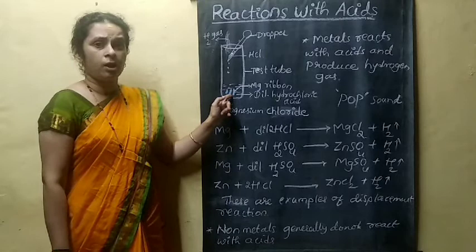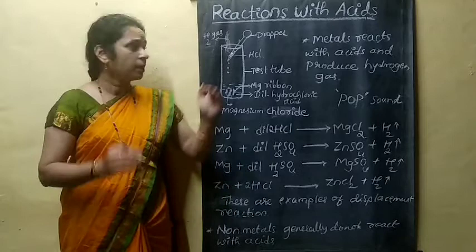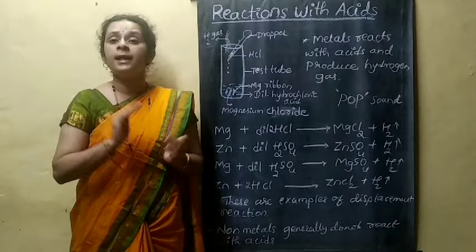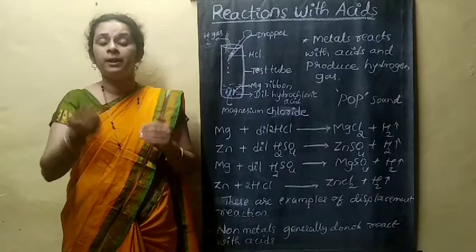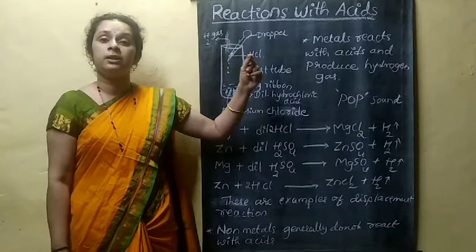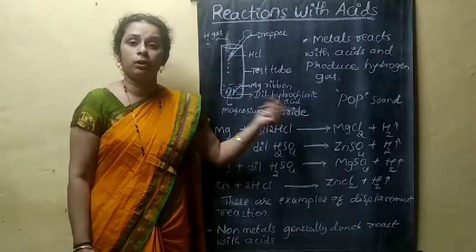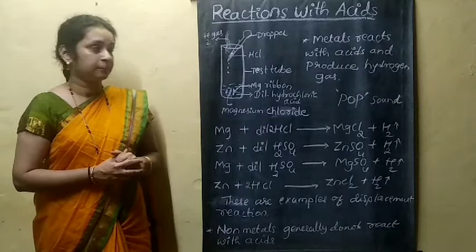You can carry out similar reactions using other metals and acids. Instead of magnesium, you can take zinc, and instead of HCl, you can use sulfuric acid. In general, when metals react with acids, they produce and liberate hydrogen gas, which is confirmed by the pop sound when a burning match stick is brought near the mouth of the test tube.